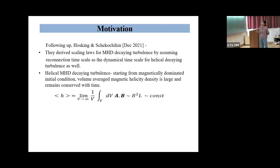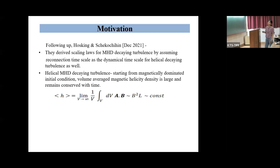Following that paper, Hosking and Shreekumar came up with their paper in which they derived scaling laws for MHD decaying turbulence by assuming the reconnection timescale as the dynamical timescale for helical decaying turbulence as well. For helical MHD decaying turbulence, starting from a magnetically dominated initial condition, the volume-averaged magnetic helicity density is large and remains conserved with time. The mean magnetic helicity can be approximated as A dot B, where A is del cross B, so it approximates to B-squared times L, which is large and remains constant with time.